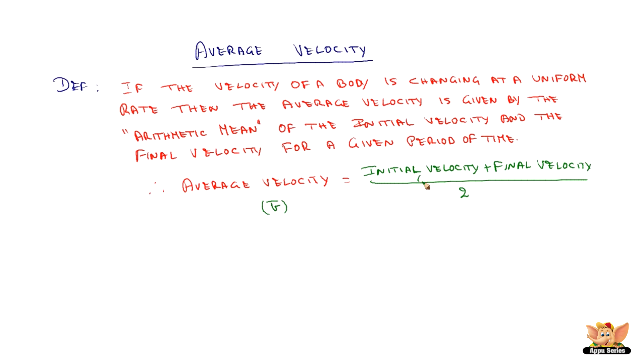If initial velocity is represented by u and final velocity by v, then we get v bar equals u plus v by 2.